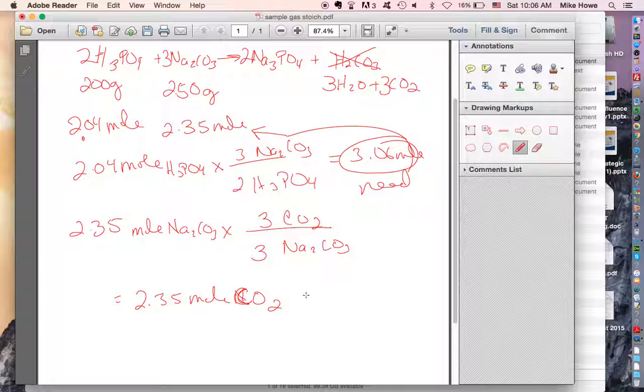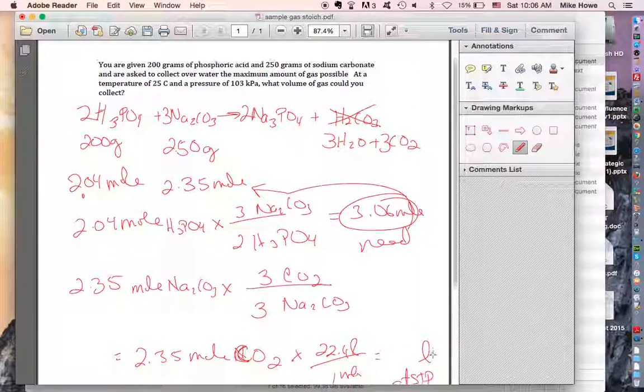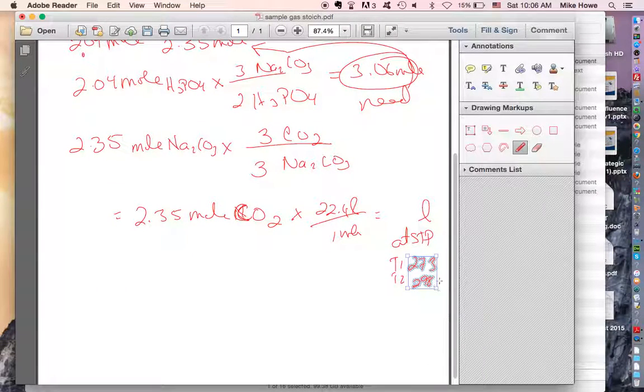All right, so now we've got two ways we can go. We can go 22.4 liters per mole. That would give us some number of liters of gas. But that would be at STP. Then you'd have to set up a T1, T2 problem. I'm not going to go ahead and work this all out. But remember that T1 would be 273. T2 would be 298. Yes, 298 because it was 25C. These are both Kelvin temperatures.